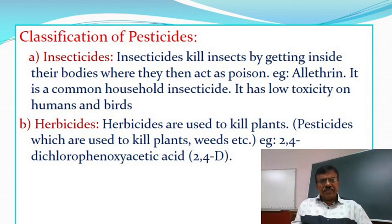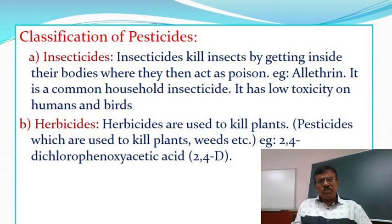Classification of pesticides. Insecticides kill insects by getting inside their bodies where they then act as poison. Example: Allethrin — it is a common household insecticide. It has low toxicity to humans and birds.